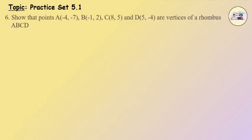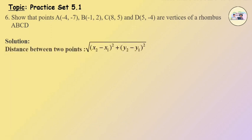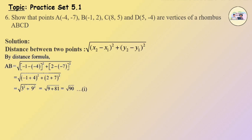Q6: Show that points A(minus 4, minus 7), B(minus 1, 2), C(8, 5) and D(5, minus 4) are the vertices of a rhombus ABCD. Solution: Distance formula is equal to under root (x2 minus x1) the whole square plus (y2 minus y1) the whole square. Therefore by distance formula, AB is equal to under root (minus 1 minus of minus 4) the whole square plus (2 minus of minus 7) the whole square, which is equal to under root 3 square plus 9 square, which is equal to under root 9 plus 81, which is equal to under root 90. Equation 1. BC is equal to under root (8 minus of minus 1) the whole square plus (5 minus 2) the whole square, which is equal to under root 9 square plus 3 square, which is equal to under root 81 plus 9, which is equal to under root 90. Equation 2.